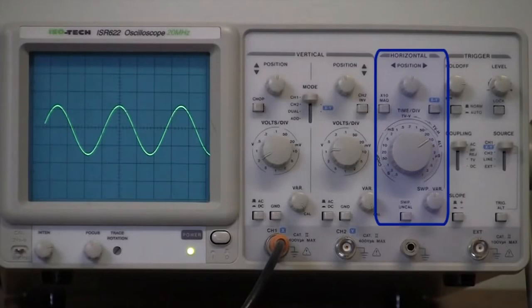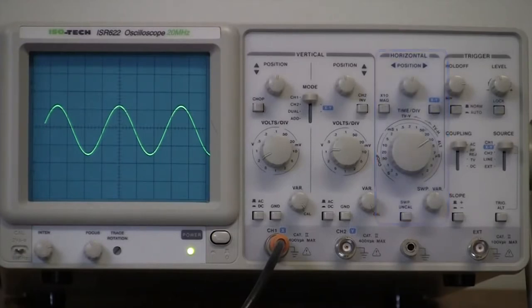The set of controls in the middle of the oscilloscope vary the position and scaling of the horizontal, or time axis, of the signal displayed on the oscilloscope screen.